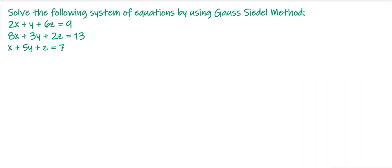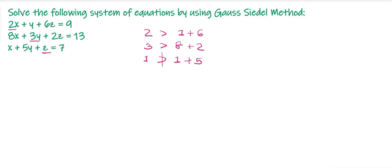The question is: solve the following system of equations by the Gauss-Seidel method: 2x + y + 6z = 9, 8x + 3y + 2z = 13, x + 5y + z = 7. In this question, the diagonal elements are not the largest in their respective rows. For the first row, 2 is not greater than 1 + 6. For the second row, 3 is not greater than 2 + 8. For the third row, 1 is not greater than 1 + 5.